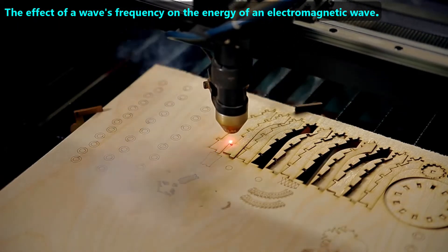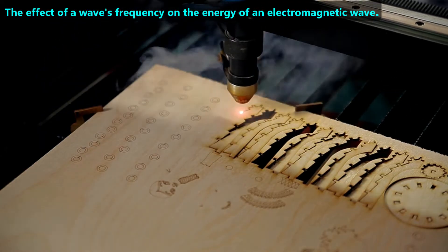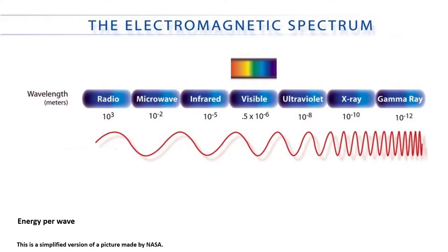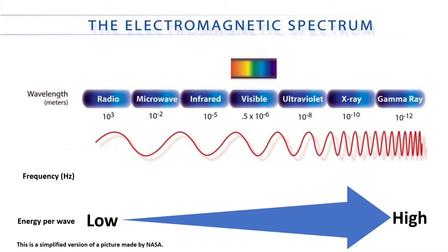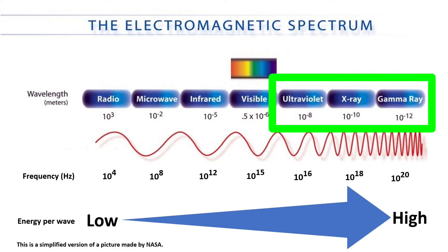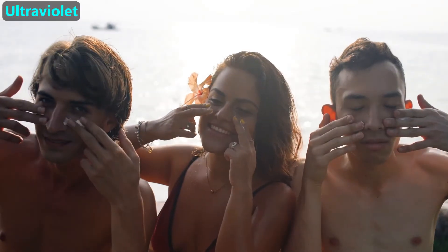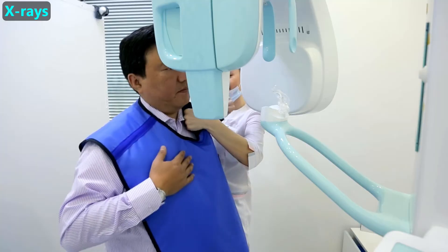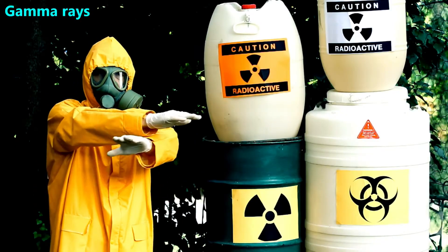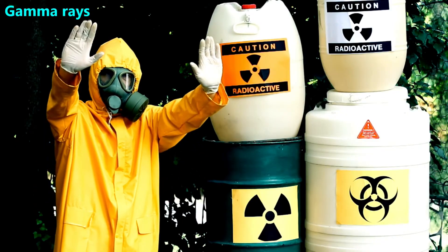Our final topic is the effect of a wave's frequency on the energy of an electromagnetic wave. On the electromagnetic spectrum diagram, as we move from left to right, the amount of energy per wave increases because the frequency increases. The three highest-energy classes are ultraviolet, x-rays, and gamma rays. These three classes can cause ionizing radiation, meaning they can burn us and cause cancer — which is why we wear sunblock against ultraviolet rays, lead aprons against x-rays, and stay away from areas generating gamma rays.